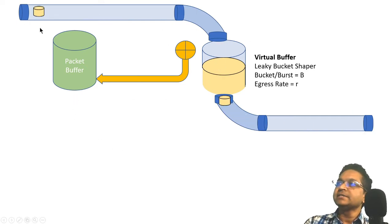There are two parameters for leaky bucket: the bucket size, which is also the burst size, denoted as B in this example, and the egress rate at which this leaky bucket is draining, which is rate R. That is the rate that you want to shape to.